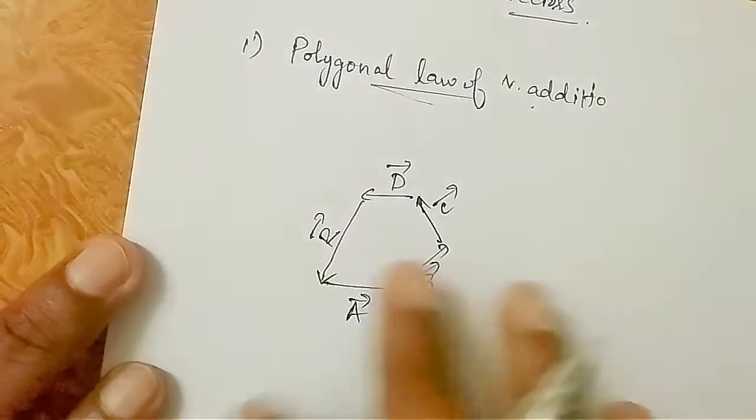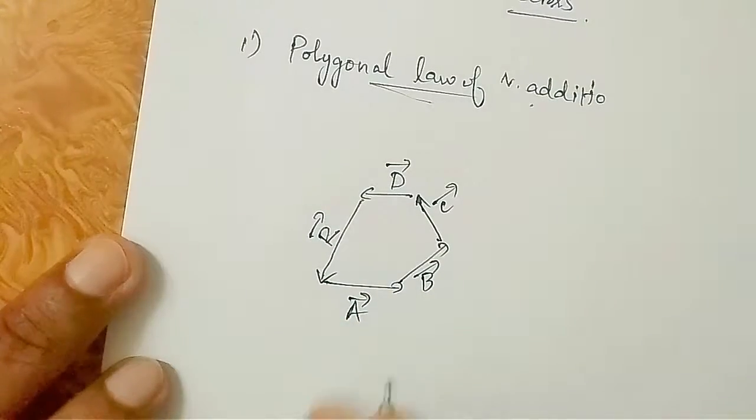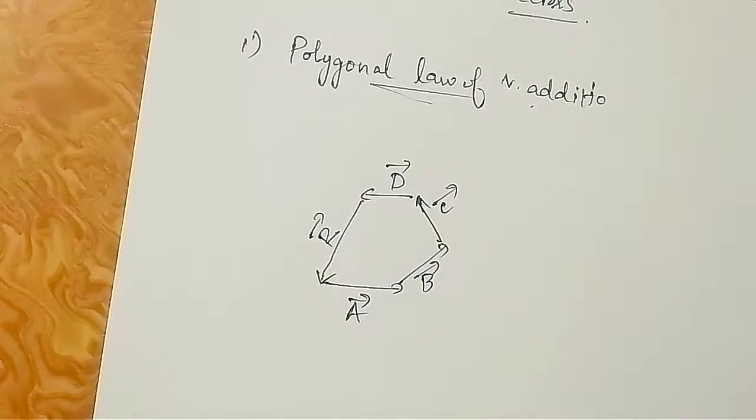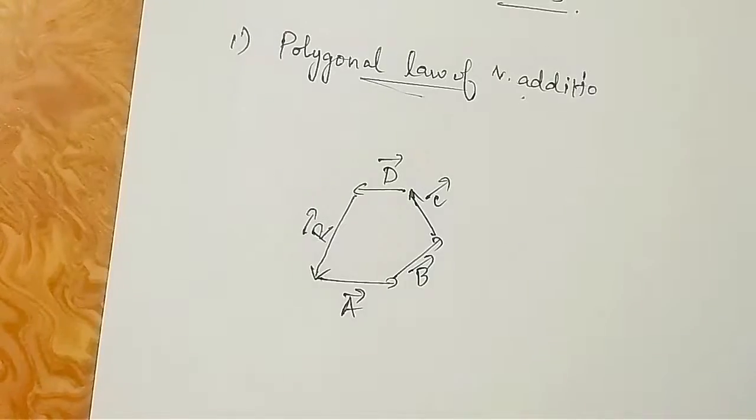If the polygon is closed, the sum equals zero.